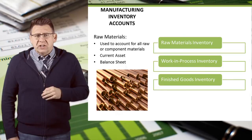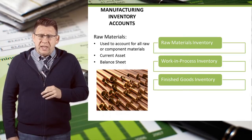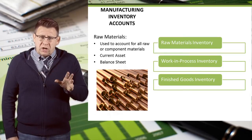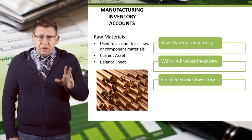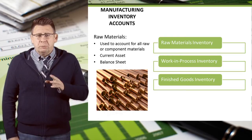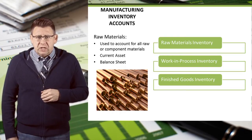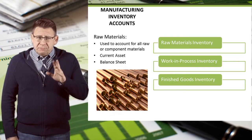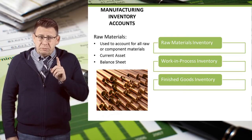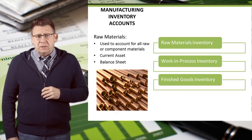The raw material inventory account is used to account for all raw or component materials that will be used in production. It is an inventory account, which makes it a current asset found on the balance sheet.